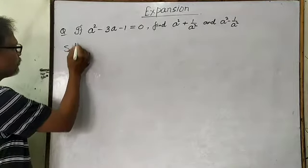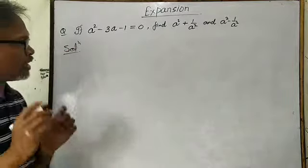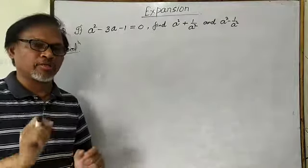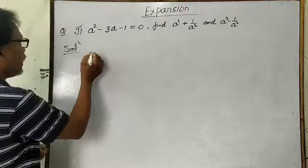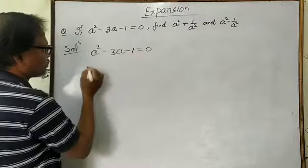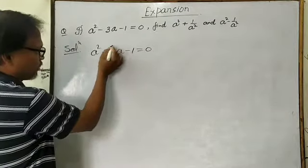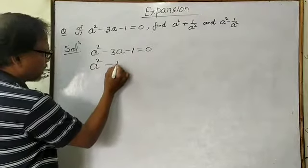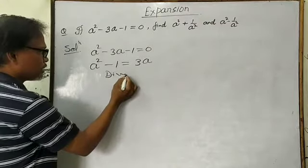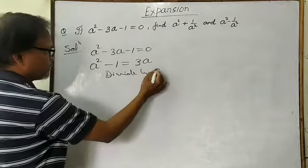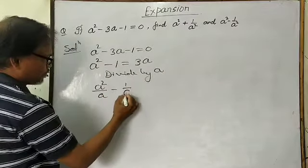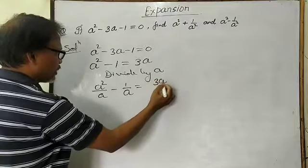In this case, first of all, you have to change the given equation in the form a plus 1 upon a, or a minus 1 upon a. Take a squared minus 3a minus 1 equals 0, take the constant to the right-hand side, then divide the whole equation by a. So you get a minus 1 upon a is equal to 3.